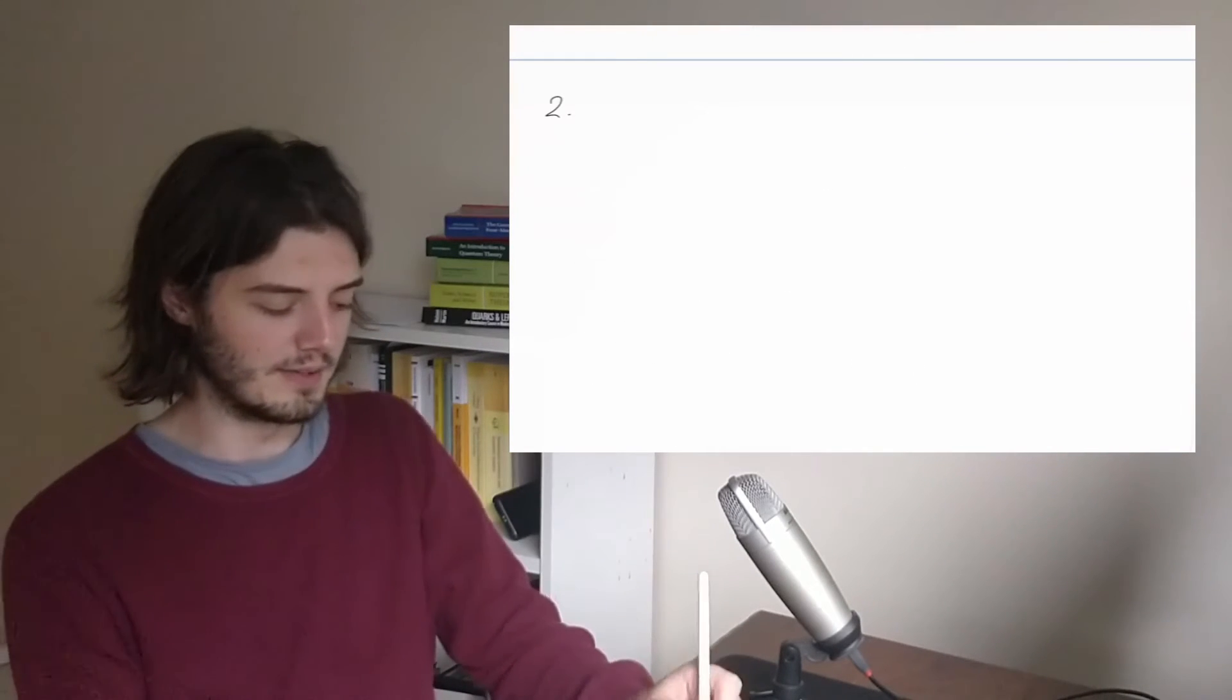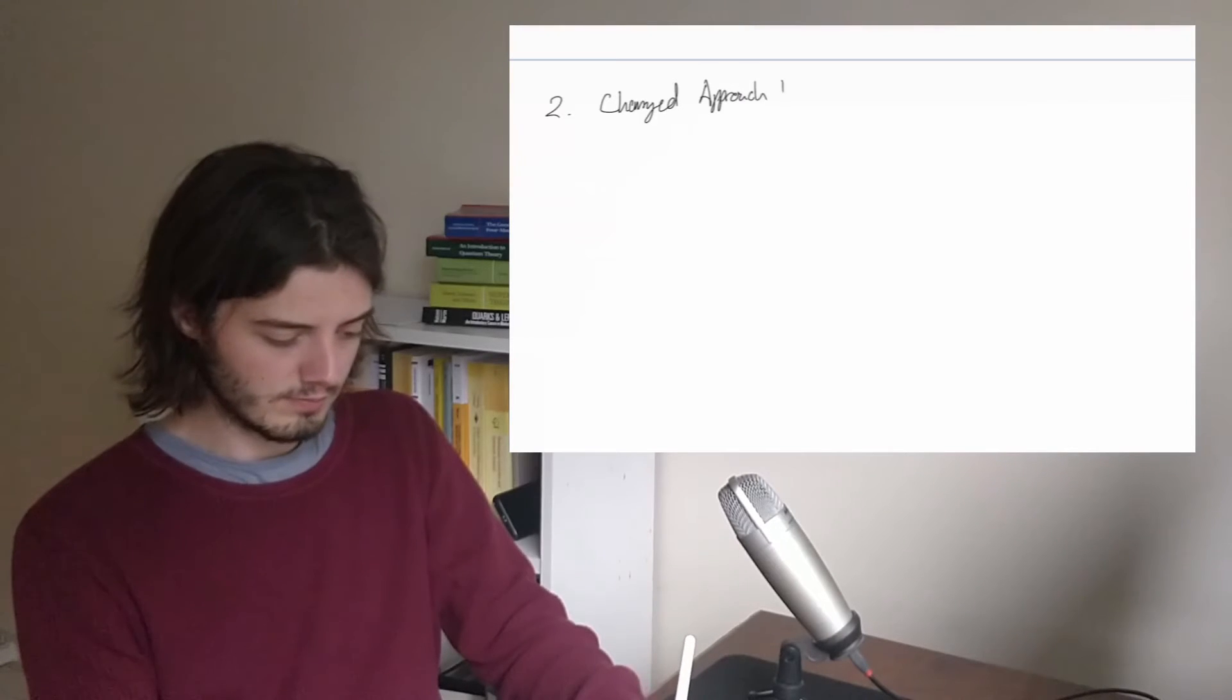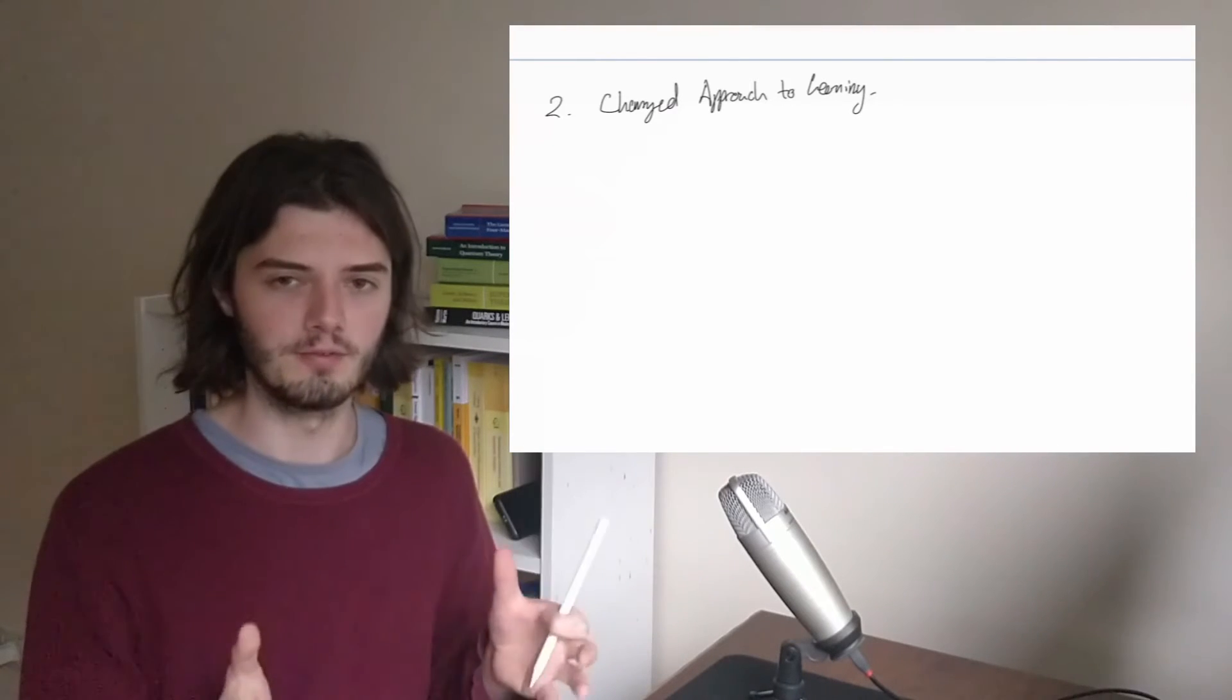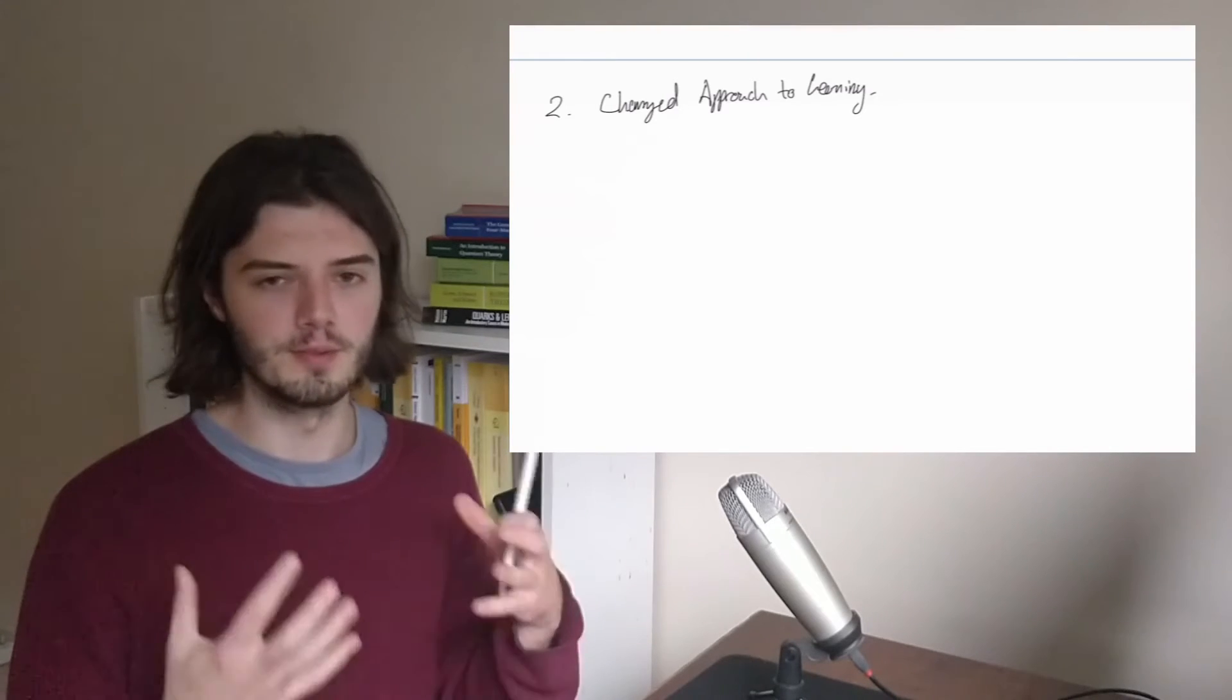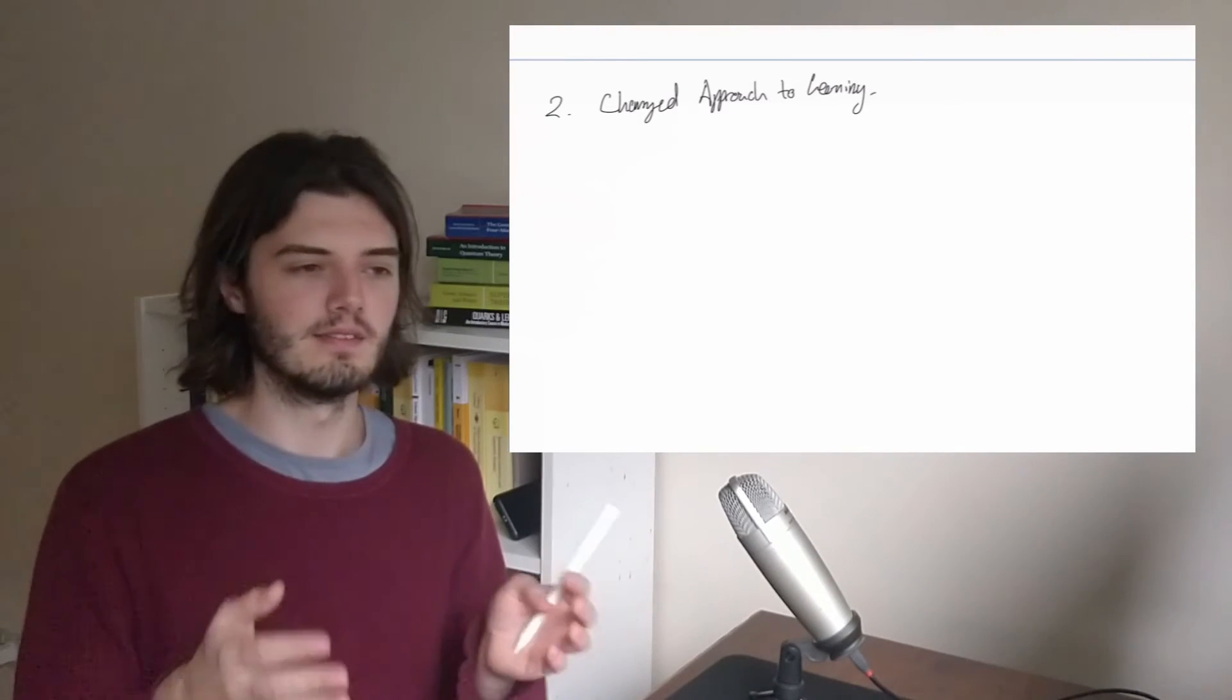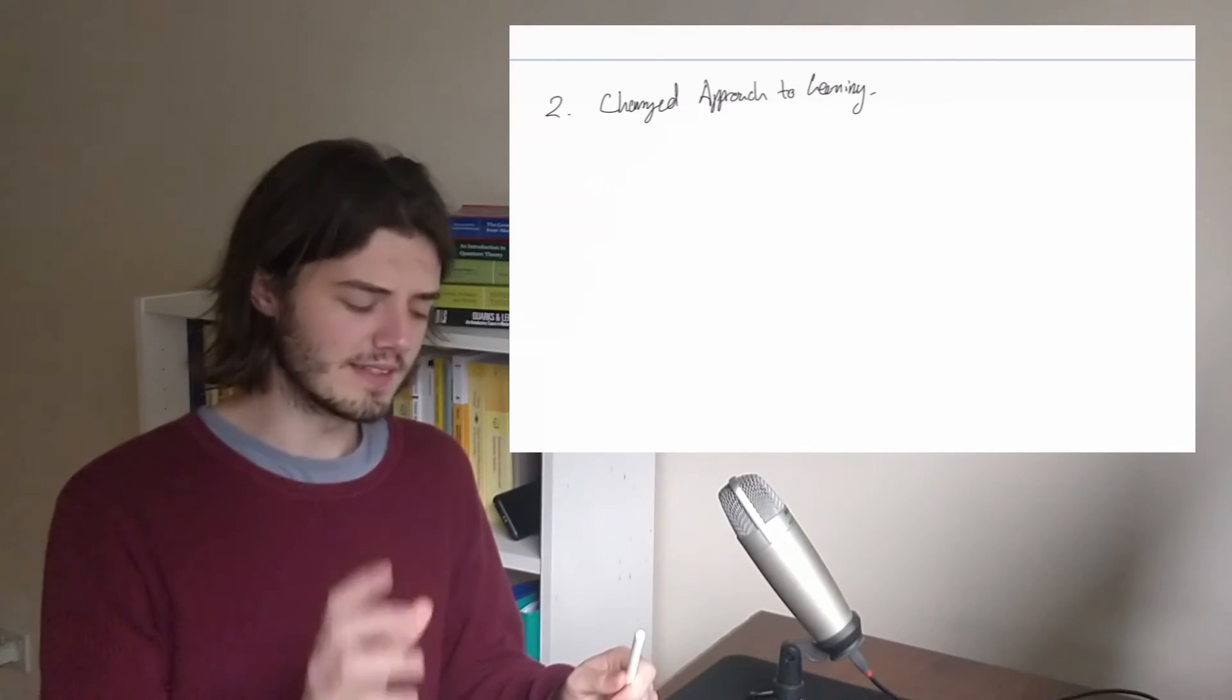Now I'll talk about how it's changed my approach to learning new things. Before I started using the Zettelkasten method, I think my approach to reading papers was I should really try and understand this paper fully and get a good grasp of what it's talking about, so that I absorb the information. Then at some point in the future when I want to use this, I'll be able to say I understand this paper, they use this technique, and let's try and apply that or do something here.